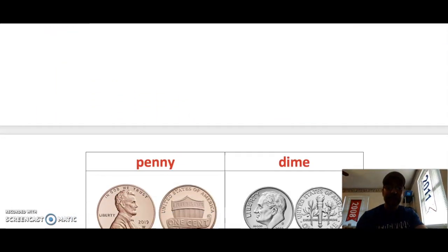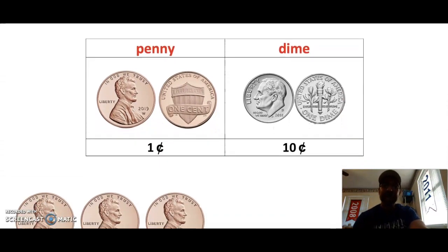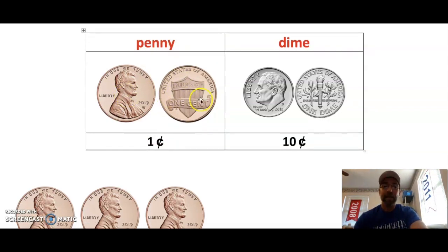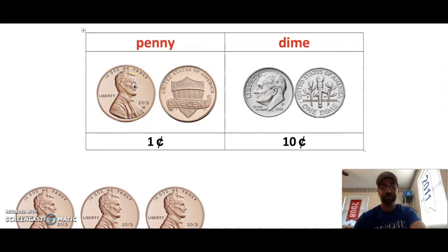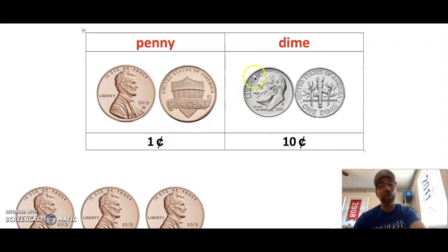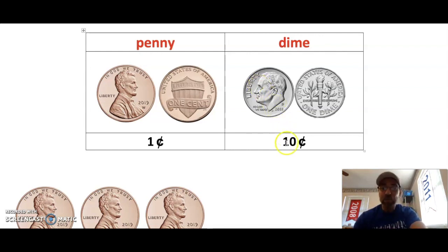In first grade, we learned that the penny has two sides — heads and tails — and Abraham Lincoln is pictured on it. The penny is worth one cent. We also learned about the dime, which is smaller than the penny and silver — our smallest coin. The dime is worth 10 cents and also has a heads and a tails.